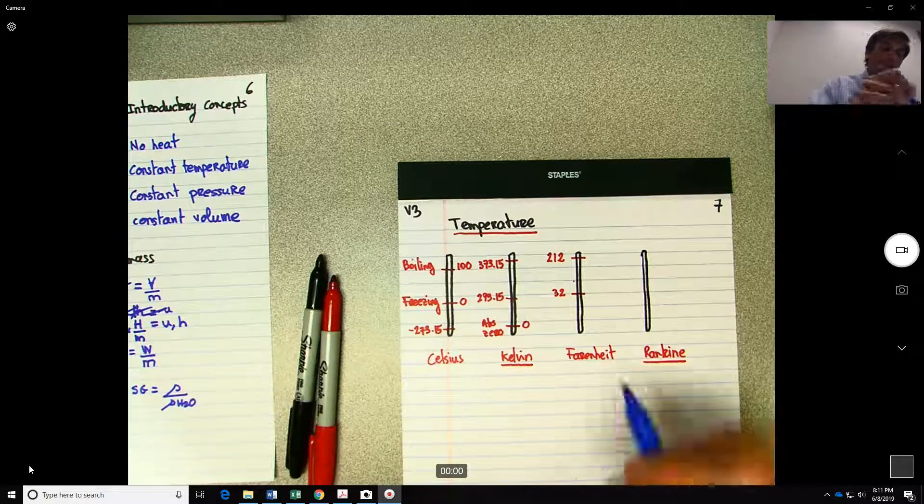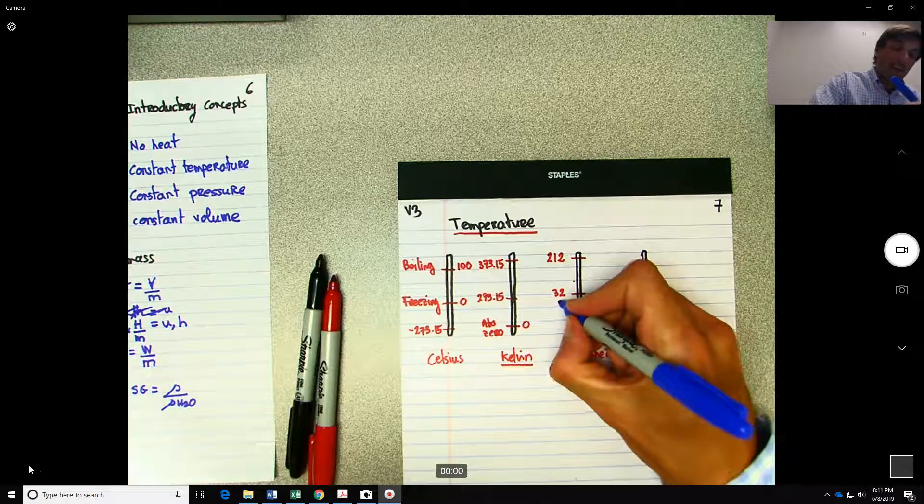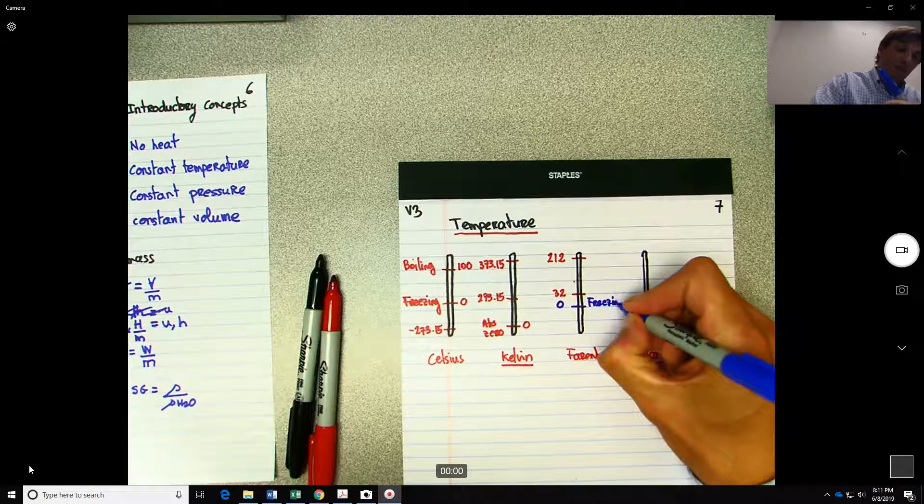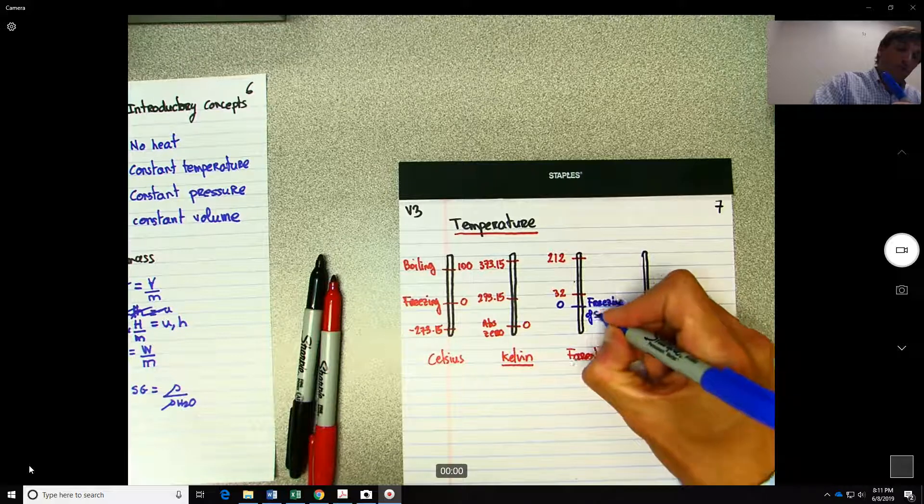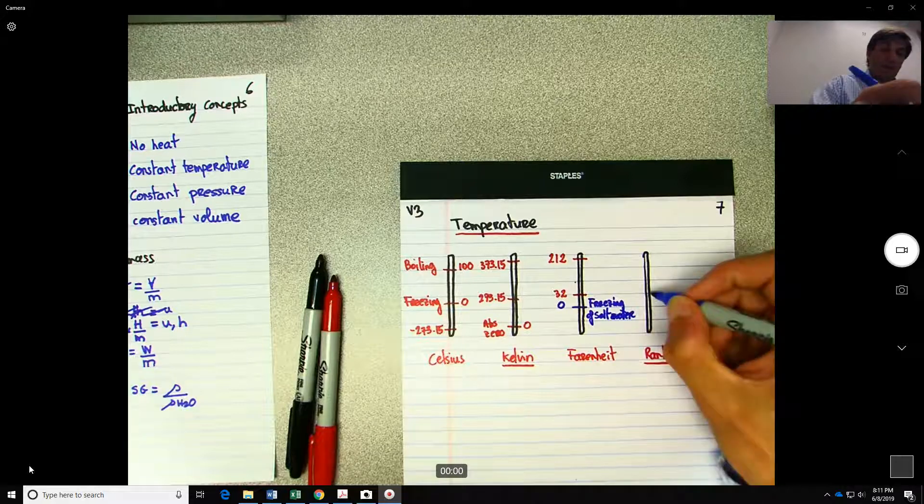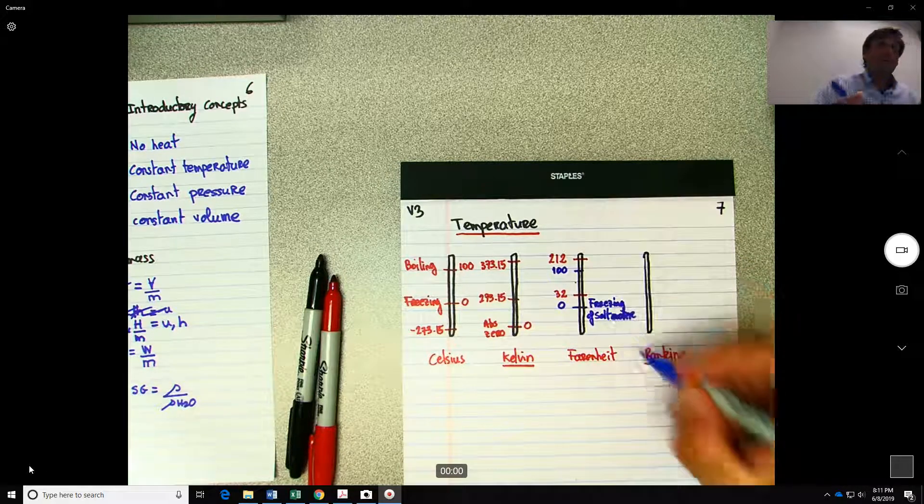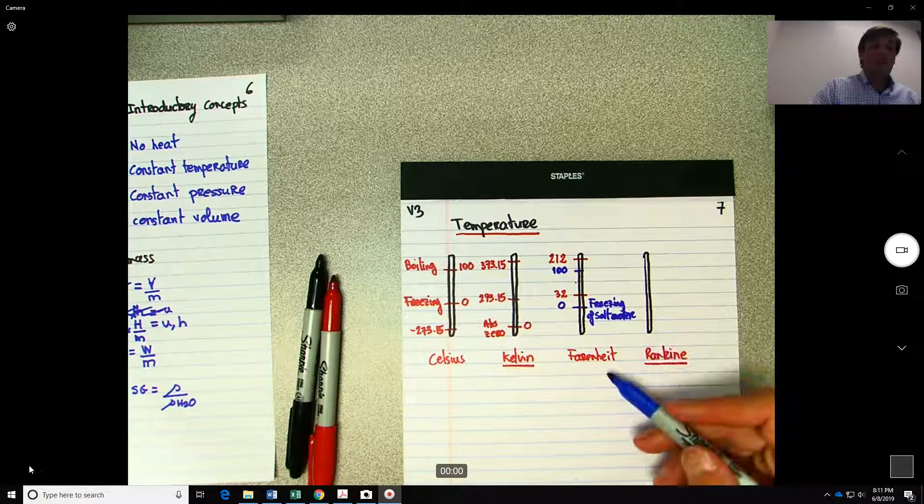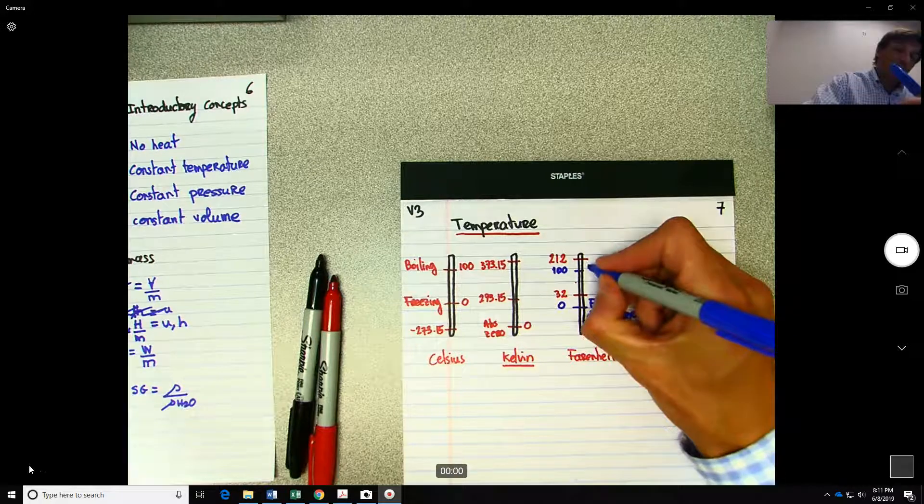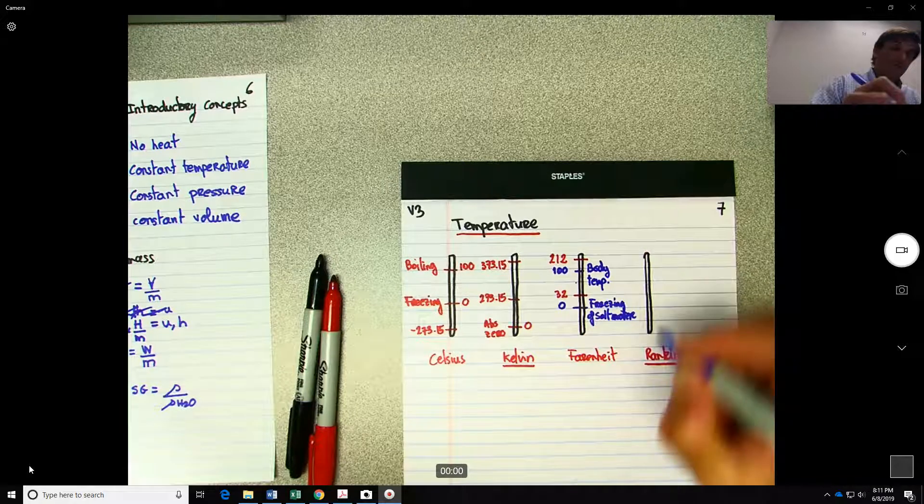But that's not really the origin for the Fahrenheit scale. The origin of the Fahrenheit scale was that really the zero was defined as the freezing of salt water. And really the 100 wasn't really 100, but was 98.6. So Fahrenheit thought that it was 100, but 98.6 is the body temperature and his upper limit was the body temperature.